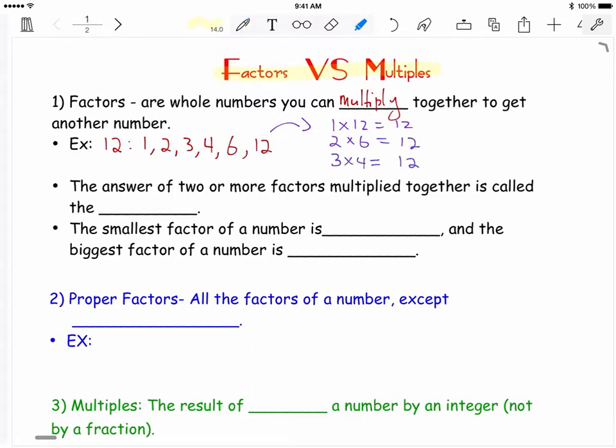Now, when you multiply two or more factors together, the answer is called the product. In the example of 3 times 4 equals 12, 12 is called the product, while 3 and 4 are called factor pair or factor partners. The smallest factor of a number is always 1, and the biggest factor of a number is always itself.